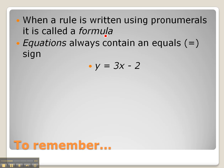When a rule is written using pronumerals, it's called a formula. So as we saw earlier, the formula for football matches is total score is equal to 6 times the number of goals kicked plus 1 times the number of behinds kicked.